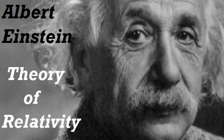Section 29: The solution of the problem of gravitation on the basis of the general principle of relativity. If the reader has followed all our previous considerations, he will have no further difficulty in understanding the methods leading to the solution of the problem of gravitation. We start off on a consideration of a Galilean domain, i.e. a domain in which there is no gravitational field relative to the Galilean reference body K. The behaviour of measuring rods and clocks with reference to K is known from the special theory of relativity. Likewise, the behaviour of isolated material points. The latter move uniformly and in straight lines.